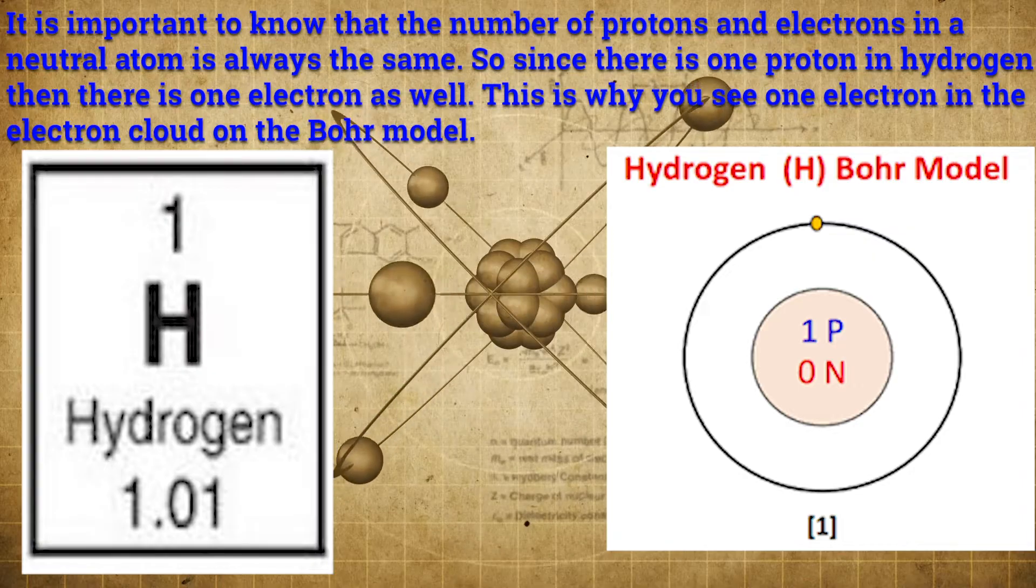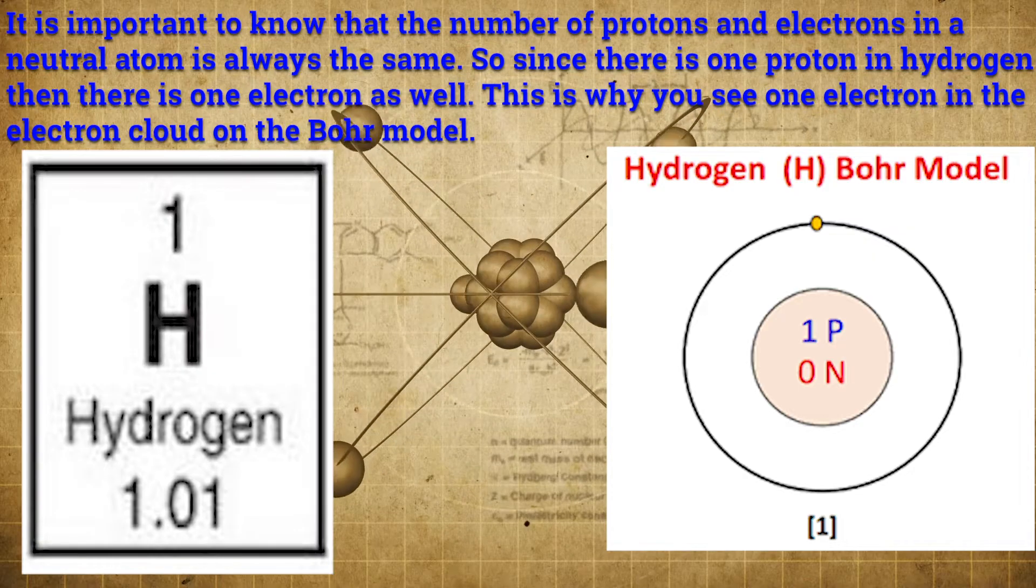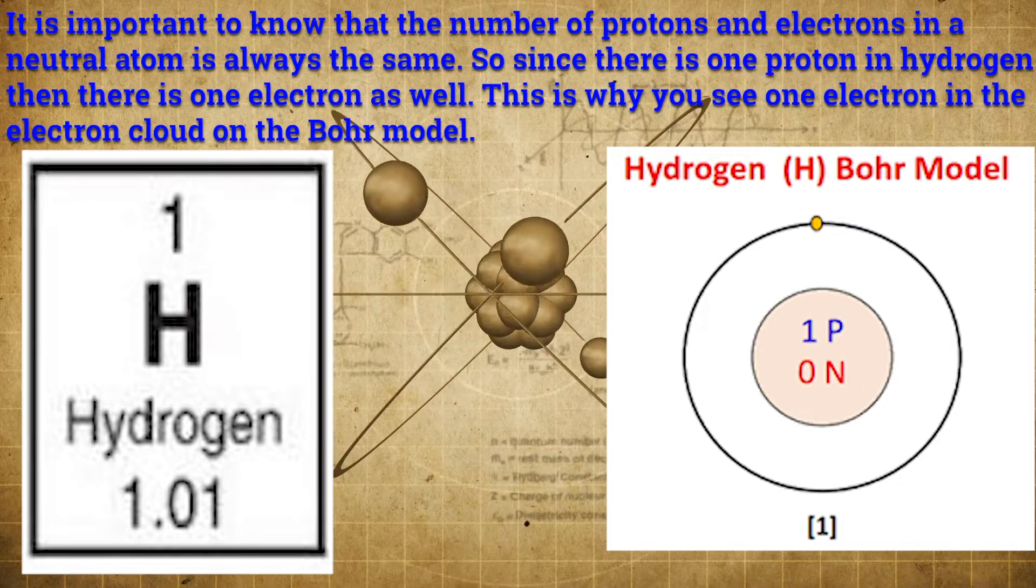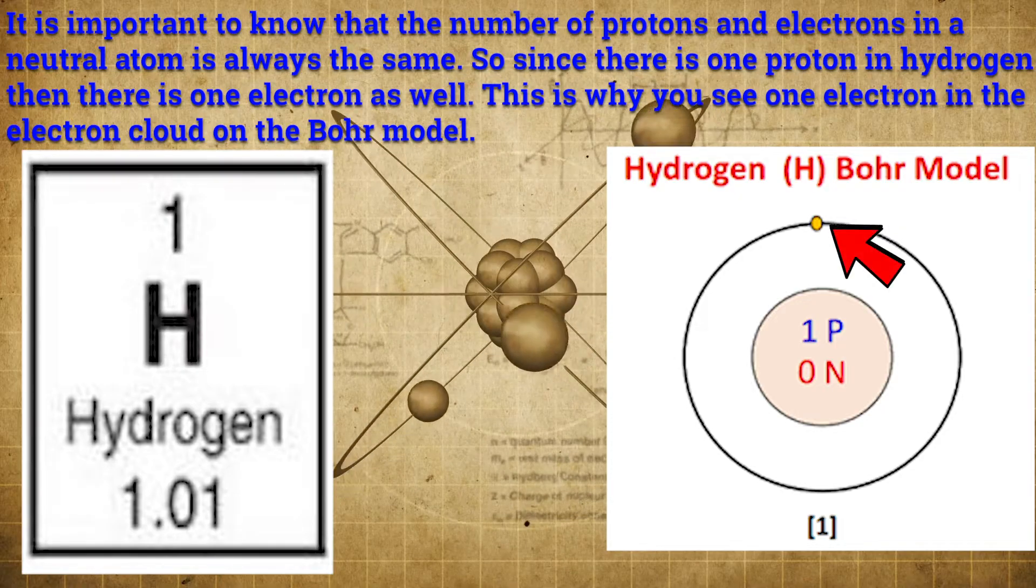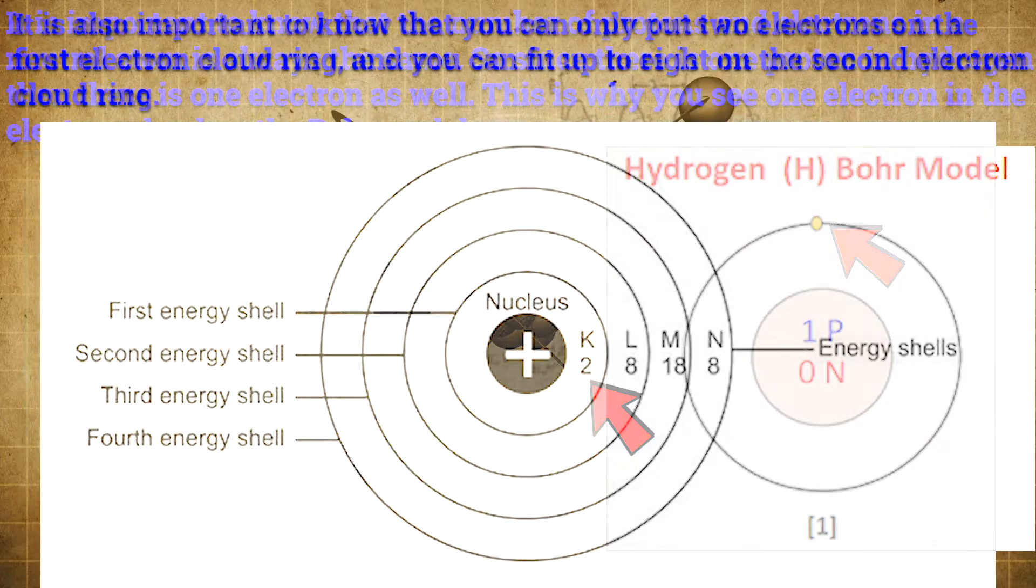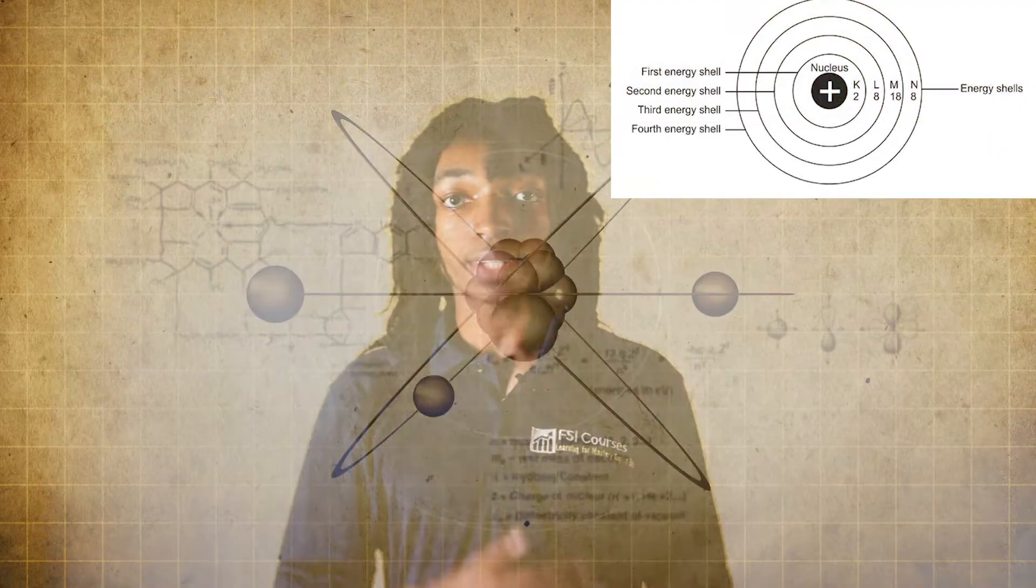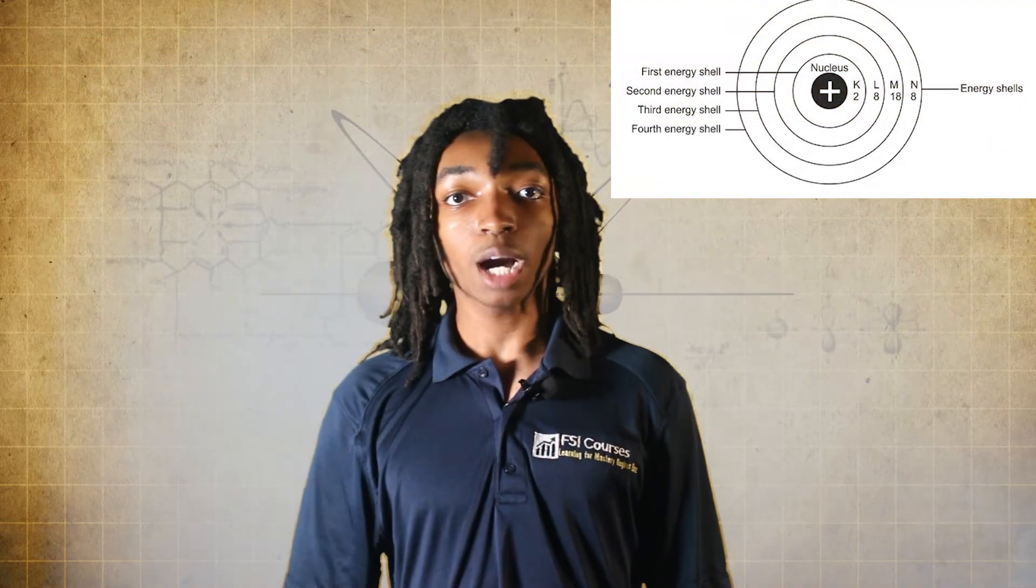It is important to know that the number of protons and electrons in a neutral atom is always the same. So since there is 1 proton in hydrogen, then there is 1 electron as well. This is why you see 1 electron in an electron cloud on the Bohr model. It is also important to know that you can only put 2 electrons on the first electron cloud ring, and you can fit up to 8 on the second electron cloud ring. We will save the other ring capacities for when you get into upper grade levels.